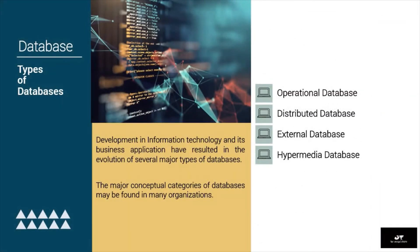Development in information technology and its business application have resulted in the evolution of several major types of databases. First, operational database. It stores data needed to support the business process and operation of a company. They are also known as subject database, transaction database, and production databases. Examples are customer database, human resource database, inventory database, and other databases containing data generated by business operations.